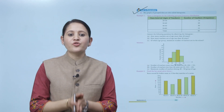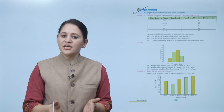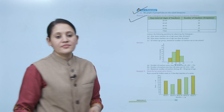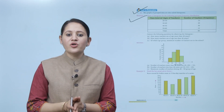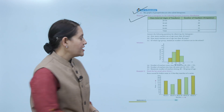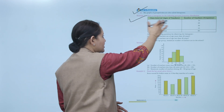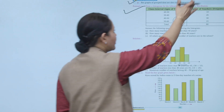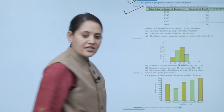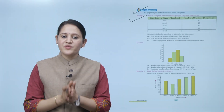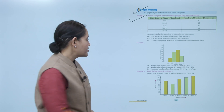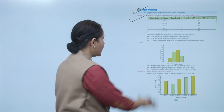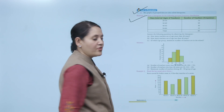Bar graphs of grouped data are also called histograms. Now we'll take an example: draw a histogram for the following grouped frequency distribution. The class intervals are 20–30, 30–40, 40–50, 50–60, with the number of teachers as frequency. Answer the following questions by observing the histogram, with age in years on the x-axis and number of teachers on the y-axis.